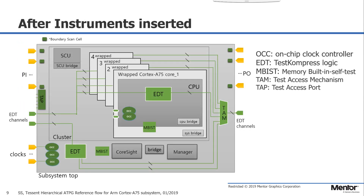The next figure shows Tessent test instruments: memory built-in self-test, boundary scan, test access port controller, test compressor logic, on-chip clock controller, and the test access mechanism, which are marked in green.